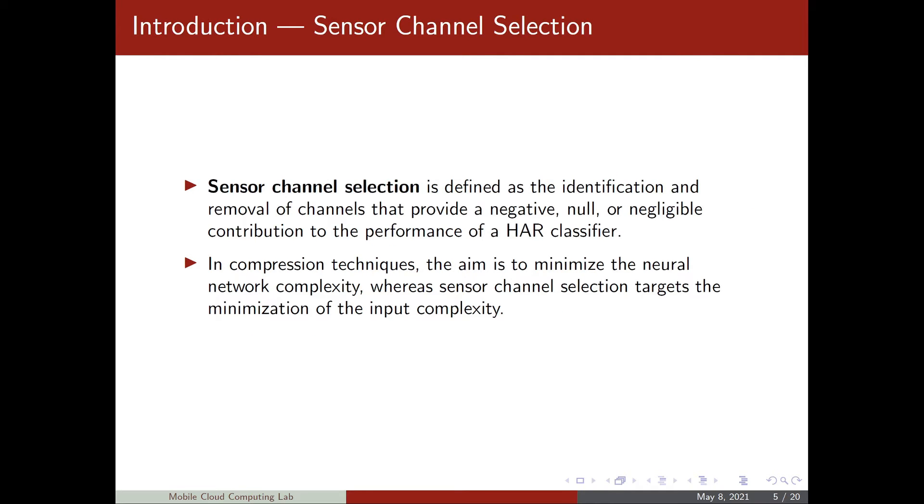But reducing the number of sensor channels may result in significant performance degradations. So when removing the number of sensor channels from the input, we want to do it in a way such that the removed channels provide negative, null or negligible contribution to the performance of the HAR classifier. And this task, this selection, is called sensor channel selection.